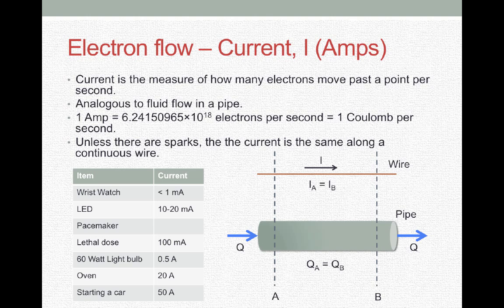So common currents are LEDs are 10 to 20 milliamps. That means 1,000th of an amp. A lethal dose for a person would be 100 milliamps. An oven runs at 20 amps or starting a car would require 50 amps.